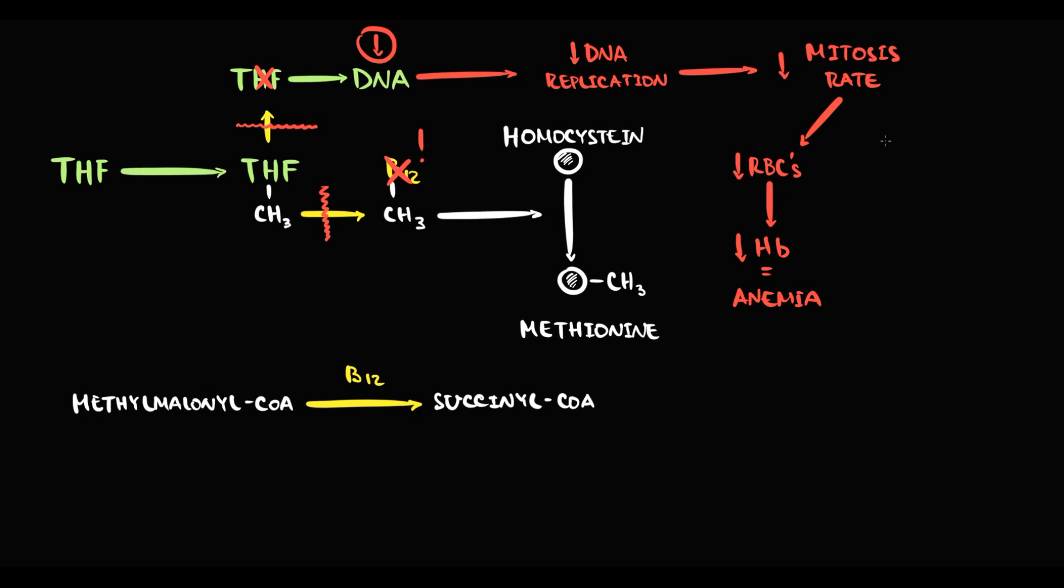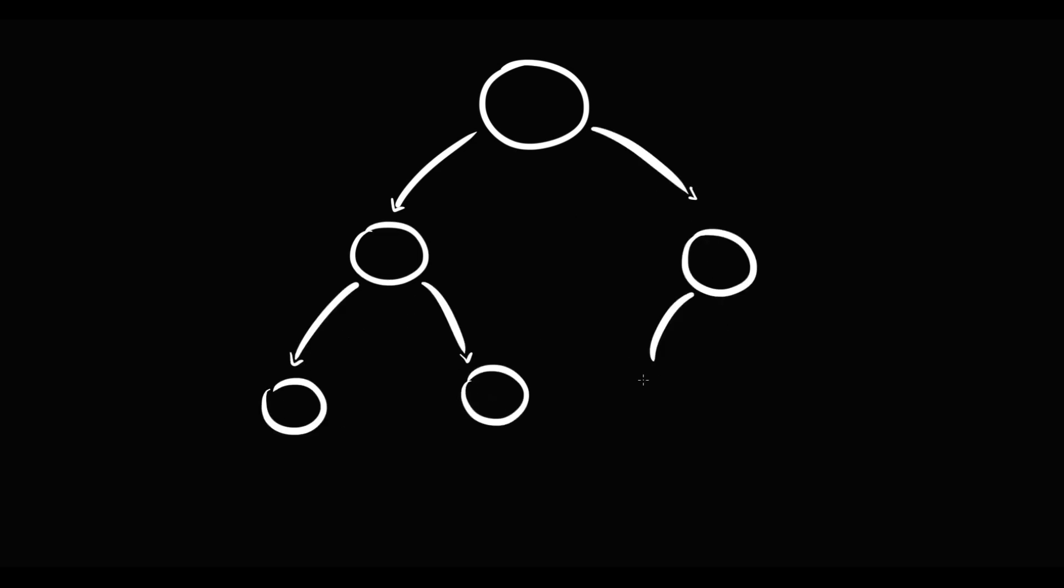And also, less cellular divisions cause formation of bigger cells. Thereby anemia will be macrocytic, so-called megaloblastic. To explain this, recall that in hematopoiesis, less mature cells have bigger size. So basically, by cellular divisions, we make from one very big cell a few smaller cells.